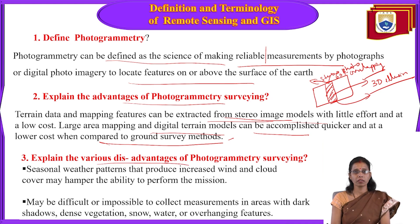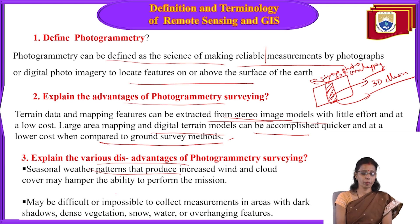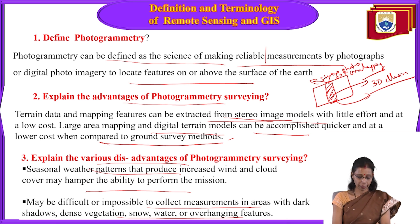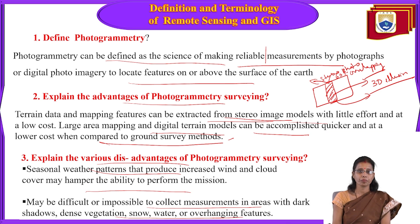The disadvantages of photogrammetry surveys: seasonal weather patterns, increased wind, and cloud cover may hamper the ability to perform the mission. Dense vegetation, snow, water, or overhanging features make collection difficult. Photogrammetry is totally dependent on sunlight — photos can only be taken when sunlight is available.